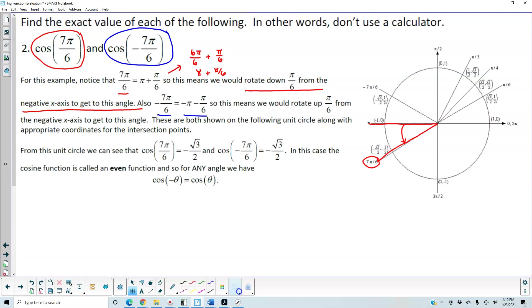So here, we're going to rotate up, and then we're going to get this angle here, which is negative 7π over 6.